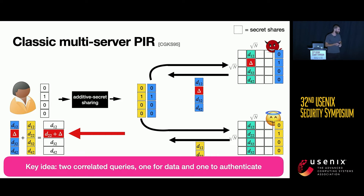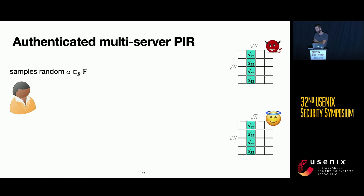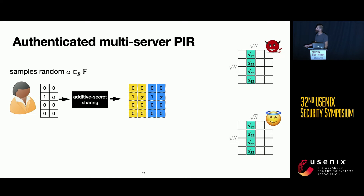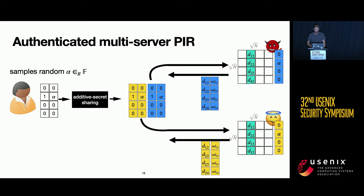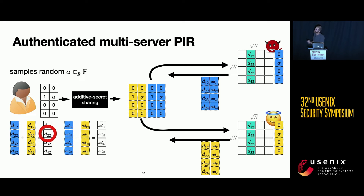The key idea to defend against this is to use two correlated queries: one to fetch the record from the database, and one to authenticate that record. Alice samples a random alpha from a field and builds two vectors — one with a one in the position of the column of interest and an alpha, and a second with an alpha in that position. She uses additive secret sharing to create shares of both vectors and sends them to the servers, which multiply both vectors with the database and send back the results. Alice can use the first result to recover the record, plus additional information to authenticate it.